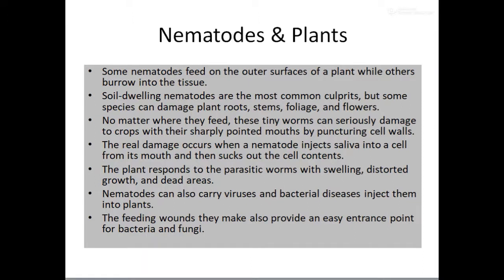When a plant is attacked by parasitic nematodes, it might show swelling, distorted growth, or areas of dead tissue. In addition to damaging plant tissues, nematodes can also carry certain viruses and bacterial diseases and inject them into the plants. The feeding wounds they make also provide easy entry points for various other bacteria and fungi.